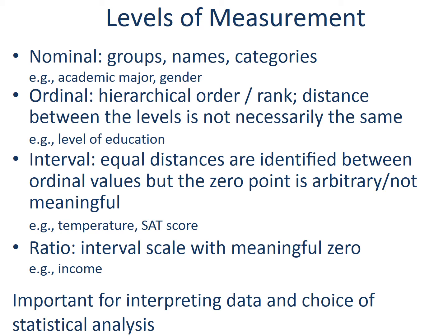Interval and ratio measures capture continuing ordinal values where the distance between values — i.e., the change from 1 to 2 and from 3 to 4 — is the same. The nature that distinguishes interval from ratio measures is that in interval measurement, the zero point is arbitrary and not meaningful. Temperature and SAT score are examples of interval measures. One degree or one point increase means the same thing at any data point. However, zero degrees does not mean temperature doesn't exist. Similarly, a zero score on a test doesn't mean the test taker has no knowledge.